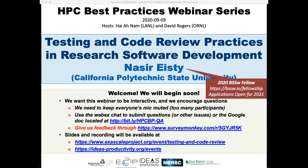The webinar is going to be presented by Nasser Eiste from California Polytechnic State University. Dr. Eiste is an Assistant Professor in the Computer Science and Software Engineering Department of Cal Poly San Luis Obispo. He received his PhD in Computer Science from the University of Alabama in Spring 2020. His research interests lie in empirical software engineering, software quality, and research software engineering. Dr. Eiste has prior experience working at Los Alamos National Lab and the National Center for Supercomputing Applications. He is a recipient of the BSSW 2020 Fellowship Award from the Department of Energy.